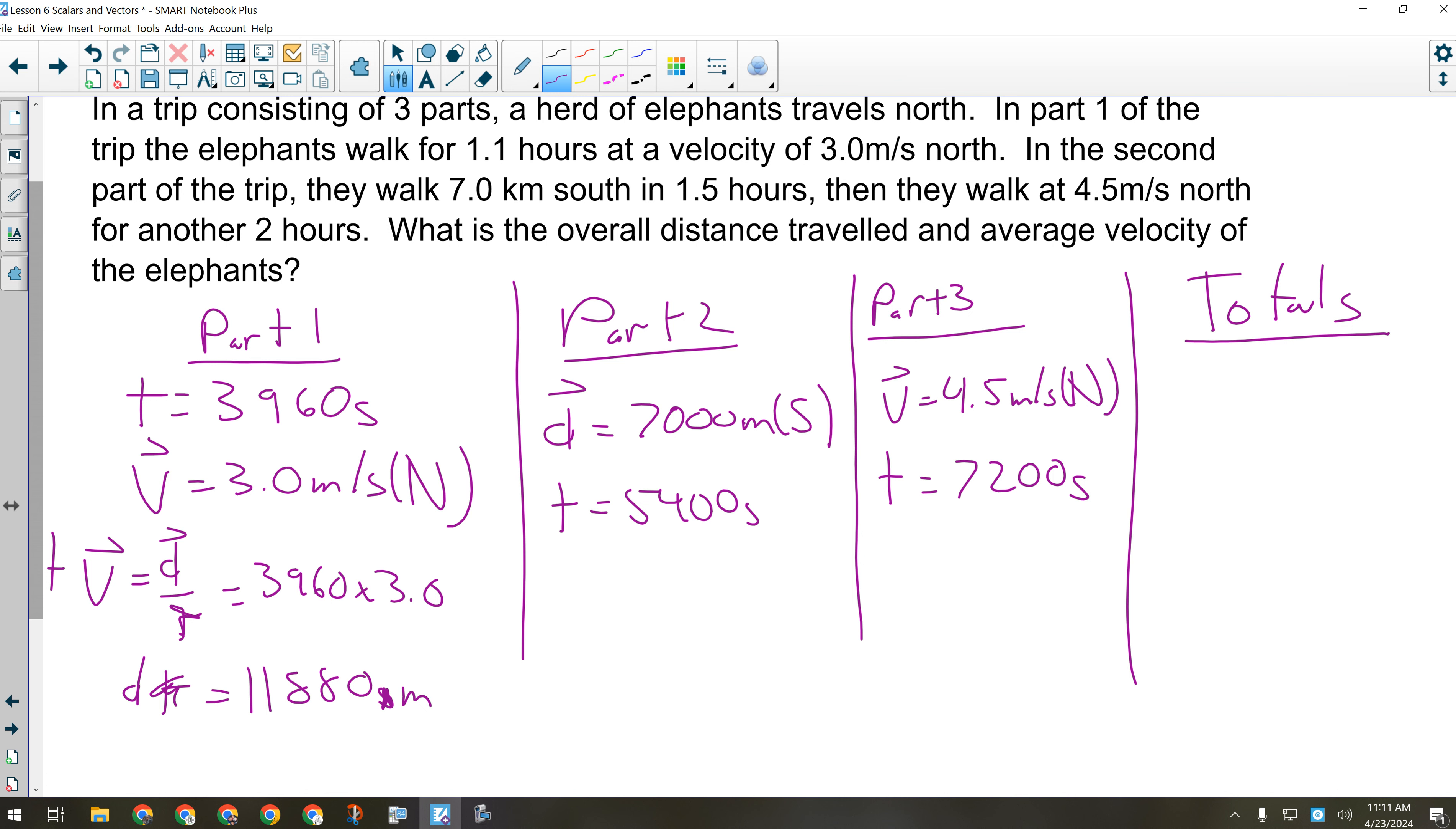I have everything I need in part two. I don't need to do anything in part two. I have displacement and time in part two. So I'm good there. This one is also north because it's a displacement. And I have to do the same calculation here. D equals V times T. So that'll be 4.5 times 7,200. 32,400 meters north for that one.